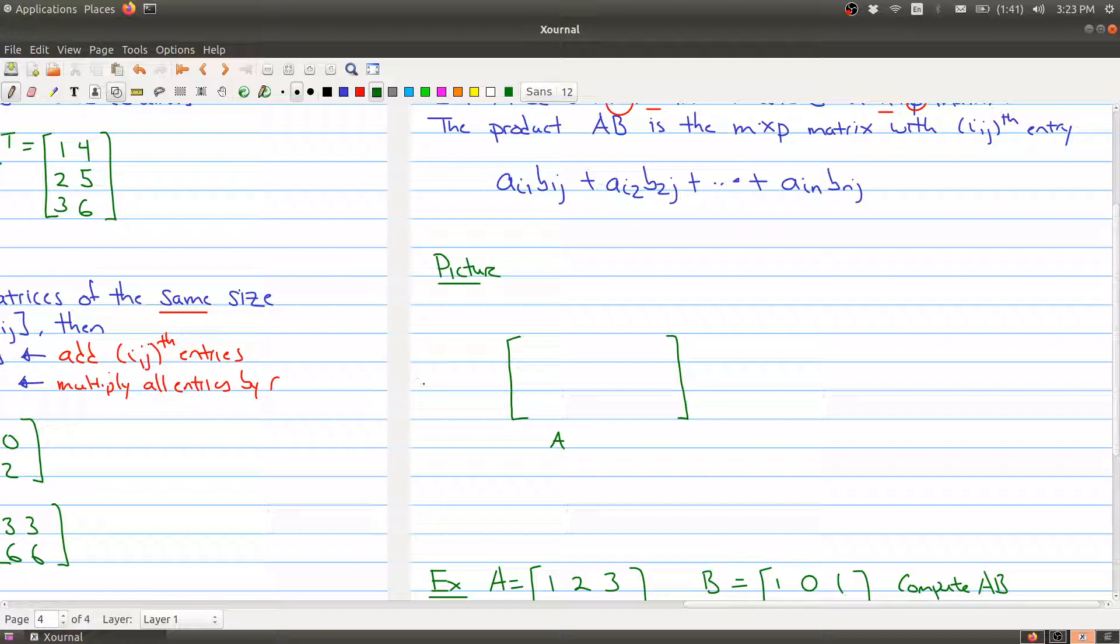I always find that the following picture helps. So I'm going to draw my matrix A. In row I, we have Ai1, Ai2 up to AiN. Remember that this is an M by N matrix, so we have N columns. Then we have my matrix B beside it, this is the thing that we're going to be multiplying. This is my matrix B, and this is an N by P matrix. What I'm going to be looking at is column J, and in column J I'm going to have B1J, B2J, all the way down to BNJ.